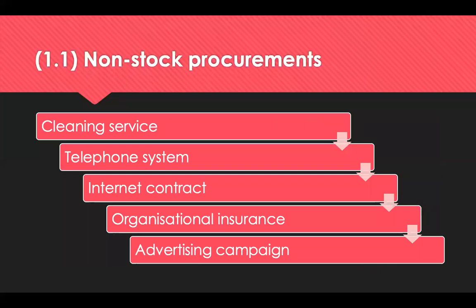Non-stock procurements are not stored within the organisation, so you cannot list them in inventory. Generally speaking, they're intangible and used to help run an organisation. Non-stock procurement may be a one-off purchase, often capital purchases. Capital purchases relate to assets — things that your business will keep for a long time. An intangible thing is something you don't necessarily touch and feel or that results in any ownership. It's just as important to get value for money when procuring non-stocks as it is for stocks. Examples include cleaning services, telephony systems, an internet contract, insurance or an advertising campaign.